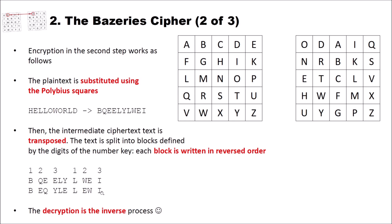And clearly, the decryption is the inverse process. You first transpose the text based on the digit key. And then you substitute using the Polybius squares. And since these ciphers here can be executed independently of each other, it's not important which cipher you first execute.